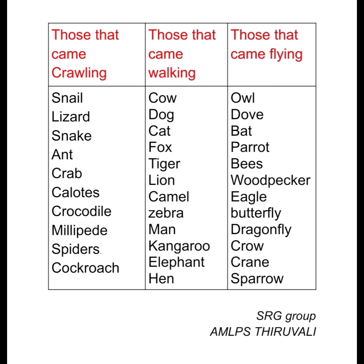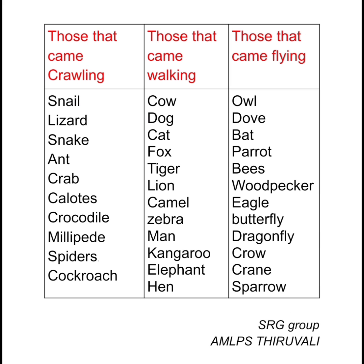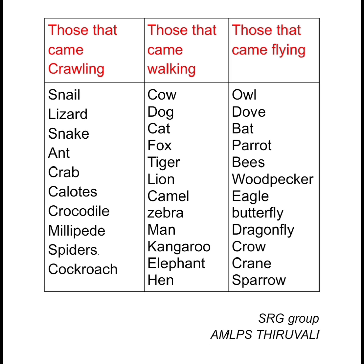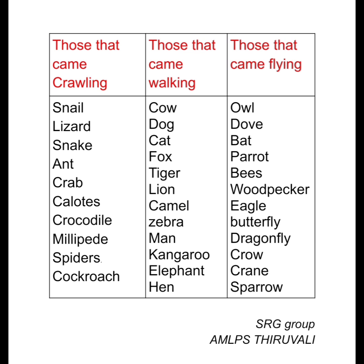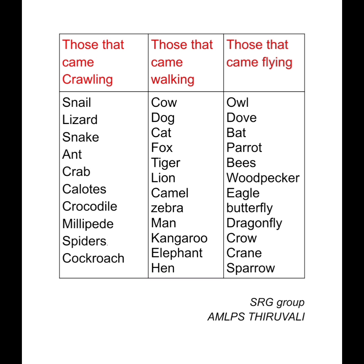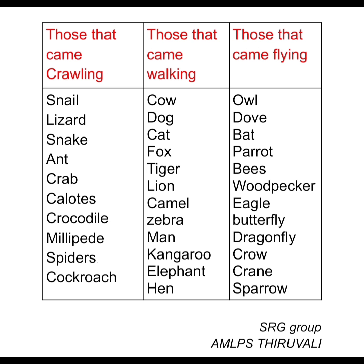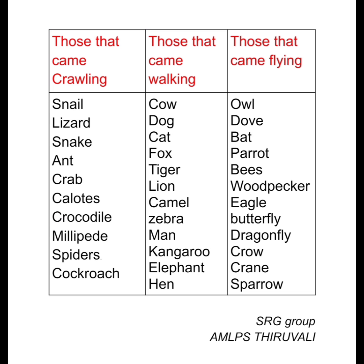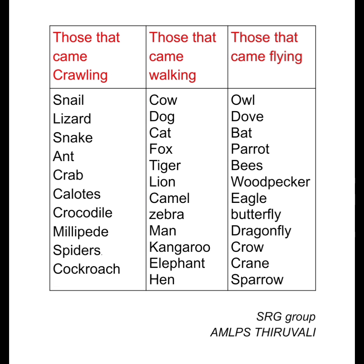Then those that came walking. Animals that walk include: Cow, Dog, Cat, Fox, Tiger, Lion, Camel, Zebra, Man, Kangaroo, Elephant, Hen.